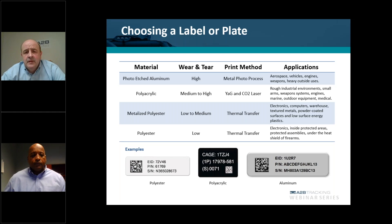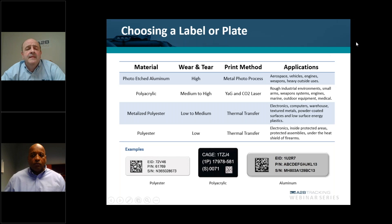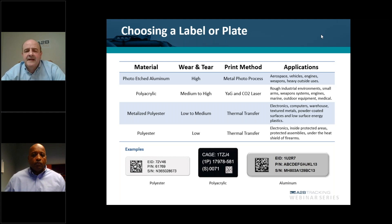When determining the material and print method, to summarize: know the environmental conditions the label will be exposed to, and then make your determination. Or if you decide to outsource your labels, your vendor will be able to recommend the best material and marking method suitable for that environment to keep you in compliance. The key point to remember is that the label must last for the entire life cycle of your asset.